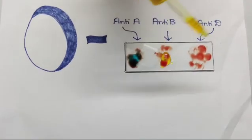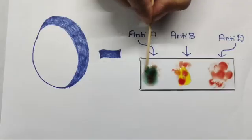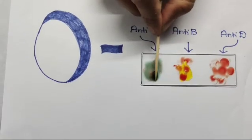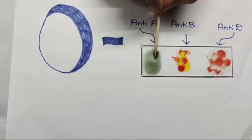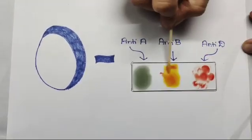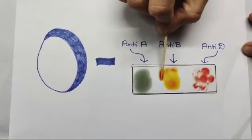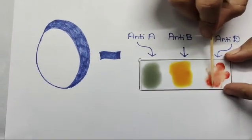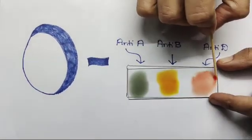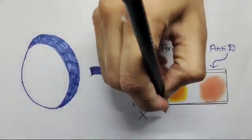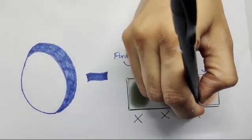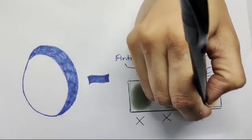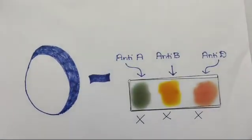No clotting will be seen in anti-D also, which means Rh antigen is absent. It is a negative blood group. Hence, the blood group determined is O negative.